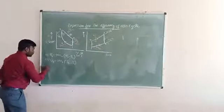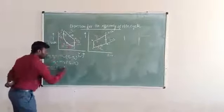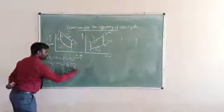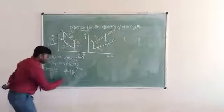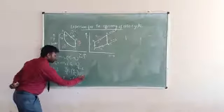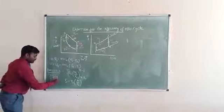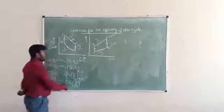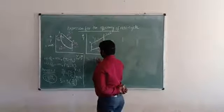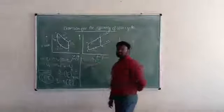Process 1-to-2 is an adiabatic process. So T2 / T1 = (V1 / V2)^(γ-1). From this we can find temperature T2, which equals T1 × (V1/V2)^(γ-1). Here V1/V2 is equal to the compression ratio Rc. So T2 = T1 × Rc^(γ-1). This is how we find the temperature at state 2.